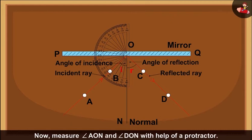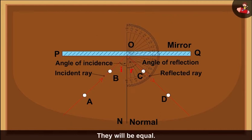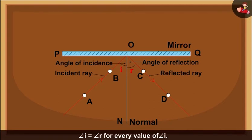Now measure angle AON and angle DON with the help of a protractor. They will be equal. If you change angle i and measure the corresponding angle of reflection, angle r, you will find that angle i is equal to angle r for every value of angle i.